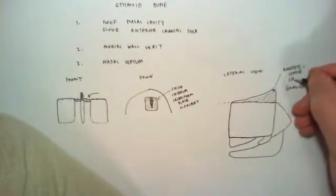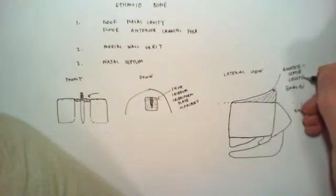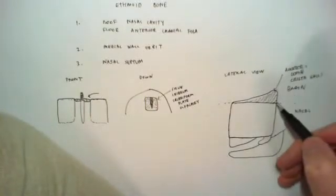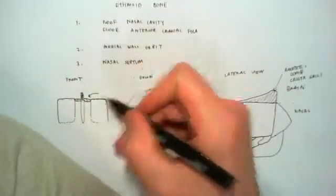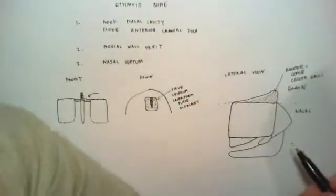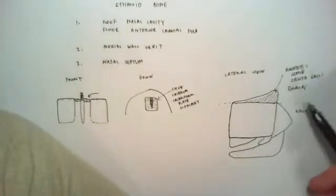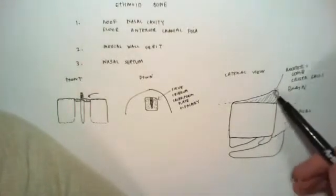And that's funny because crista galli, it's two L's, which is the name that's given to this piece of bone, that just happens to be, in Latin, crista galli is comb of the rooster.